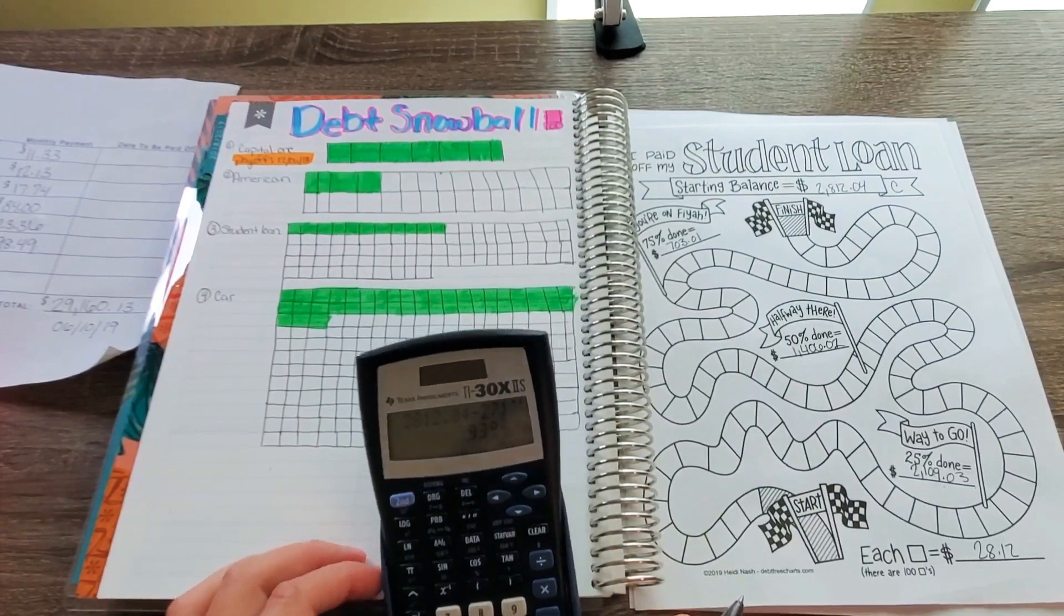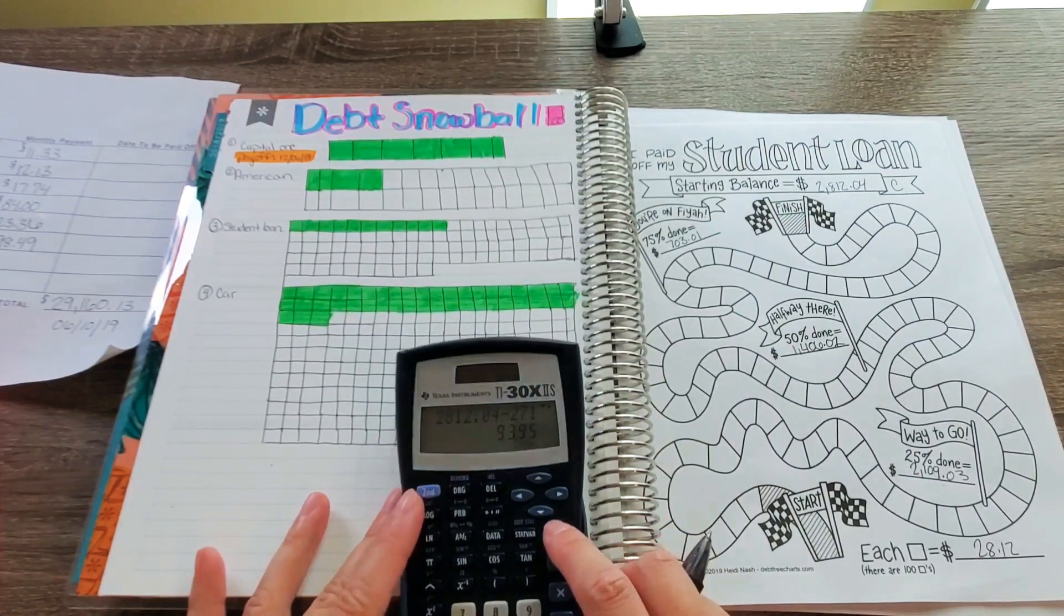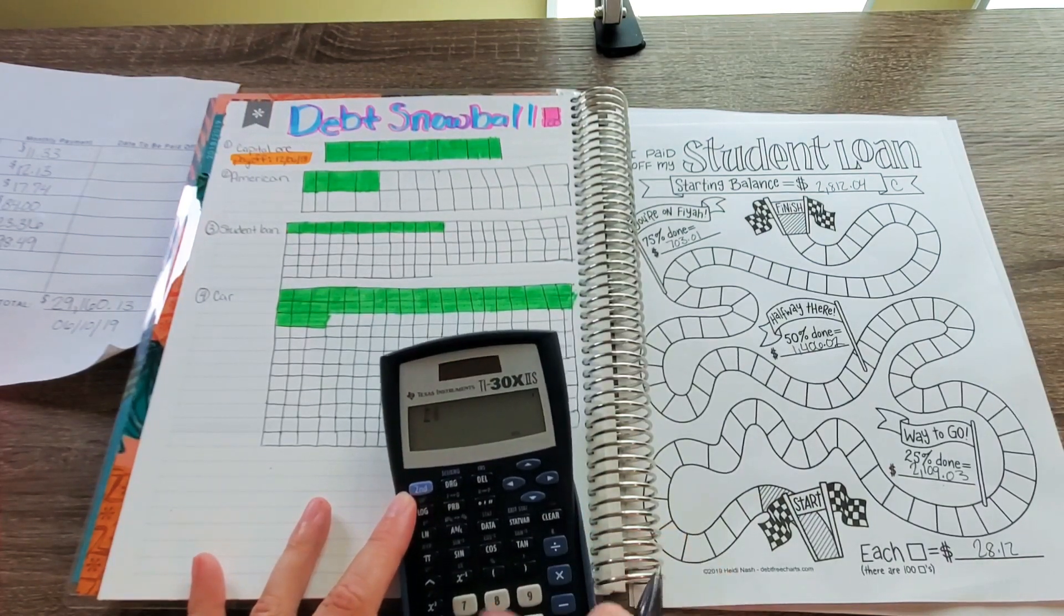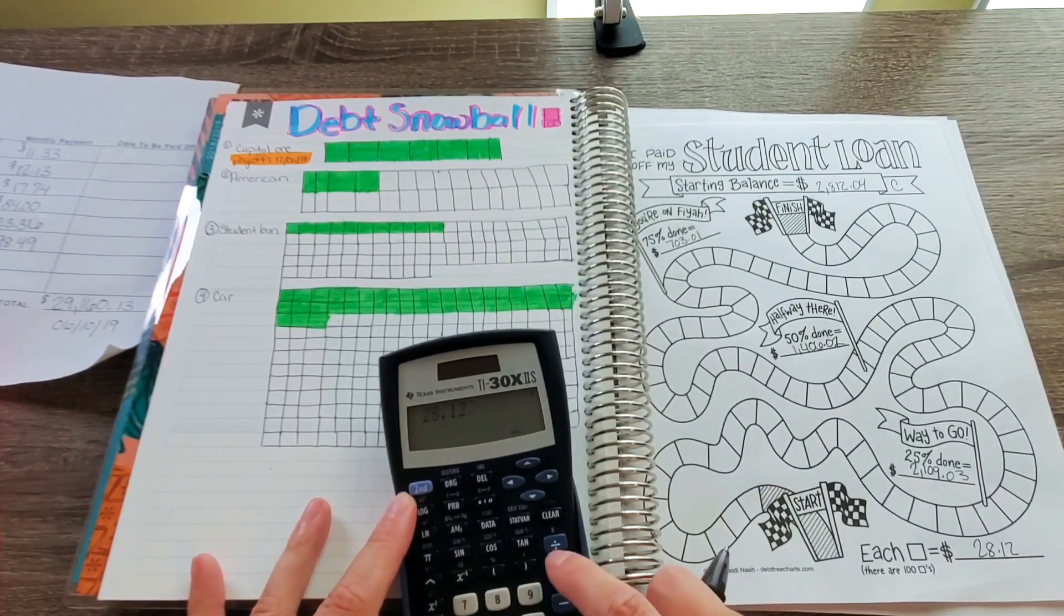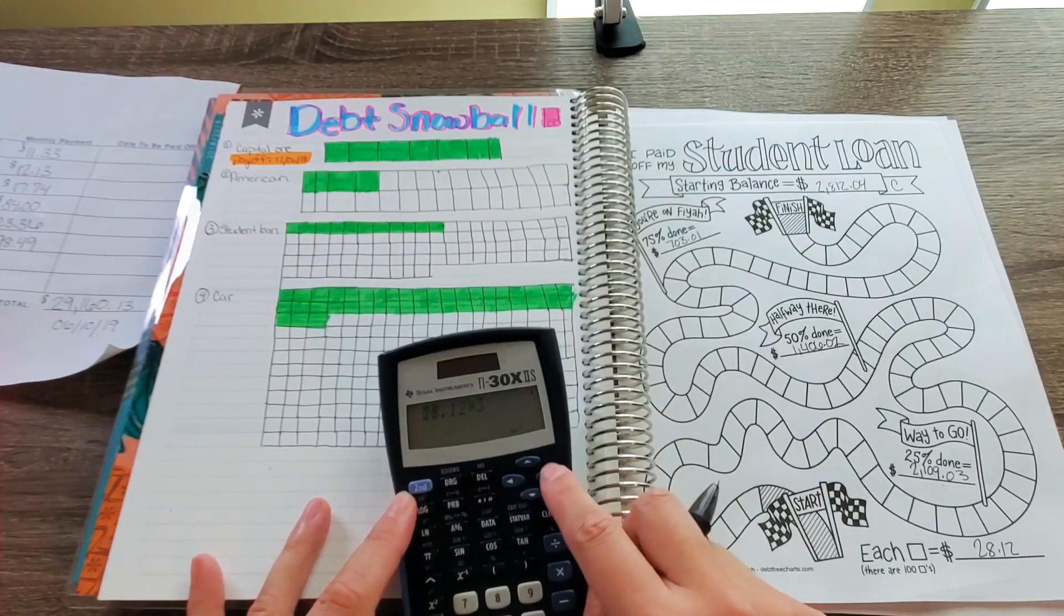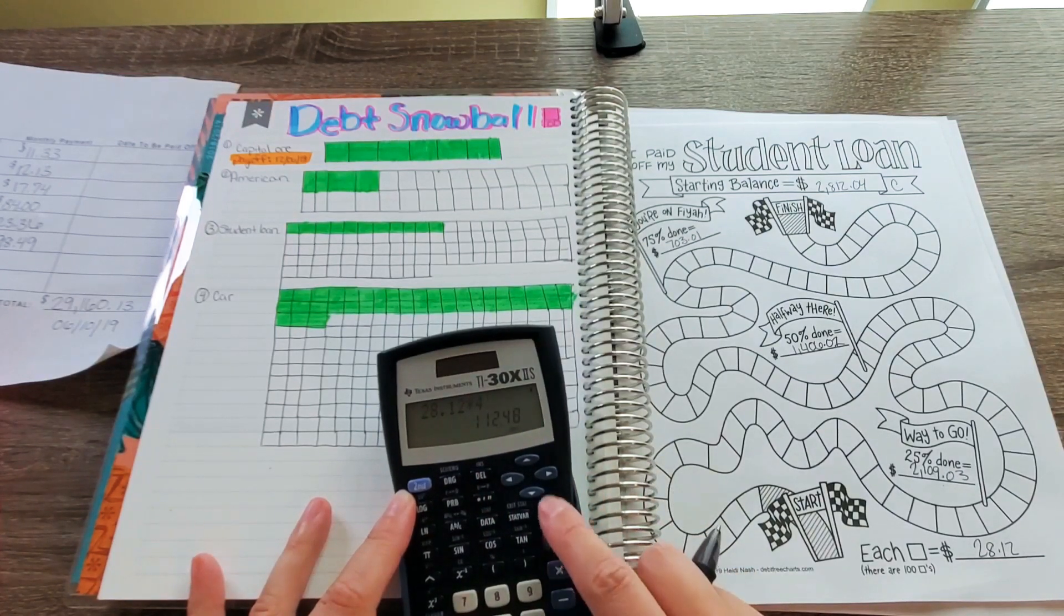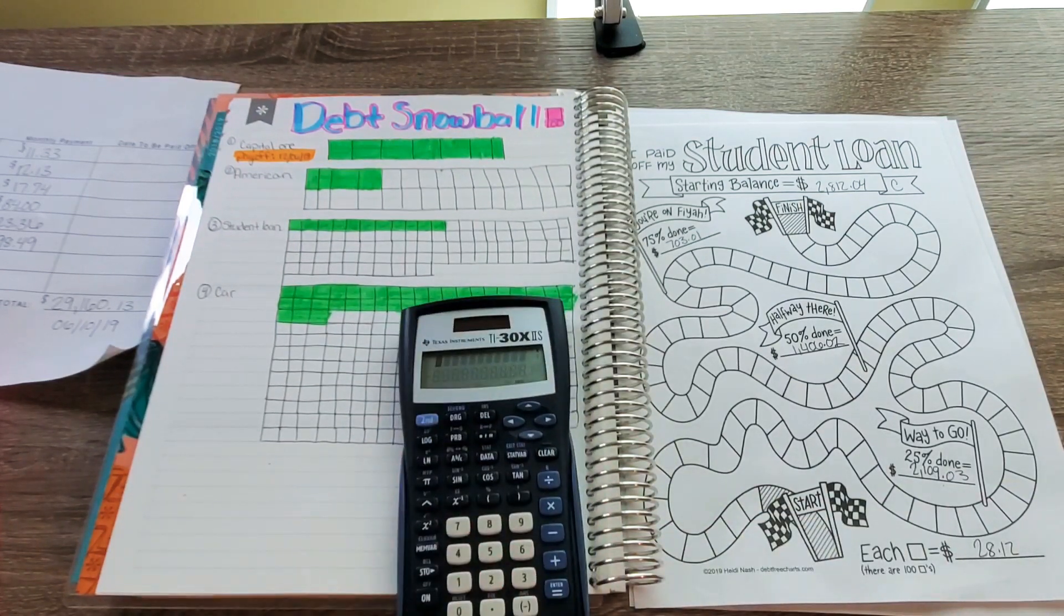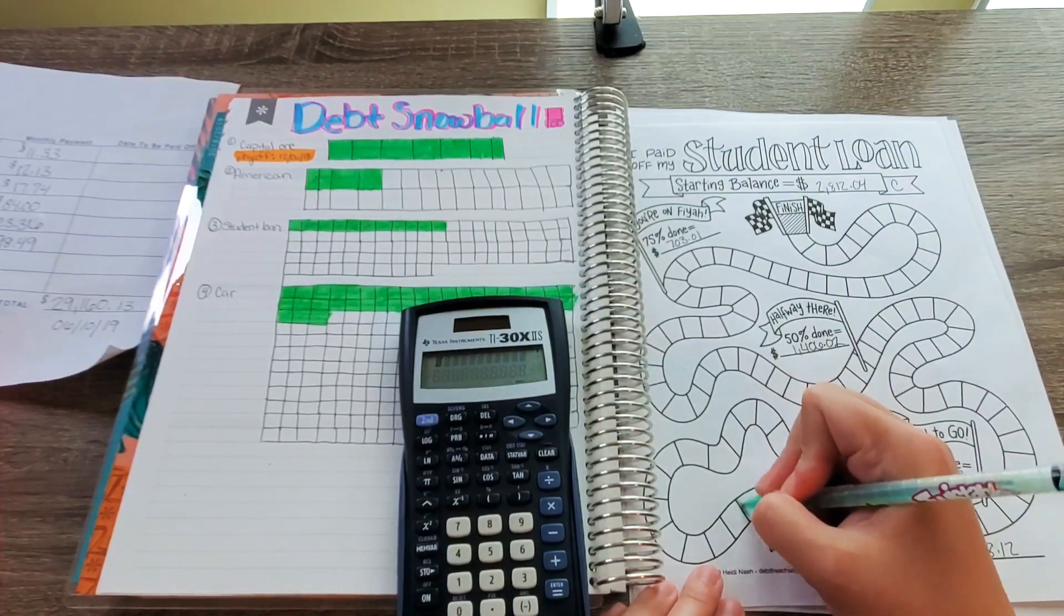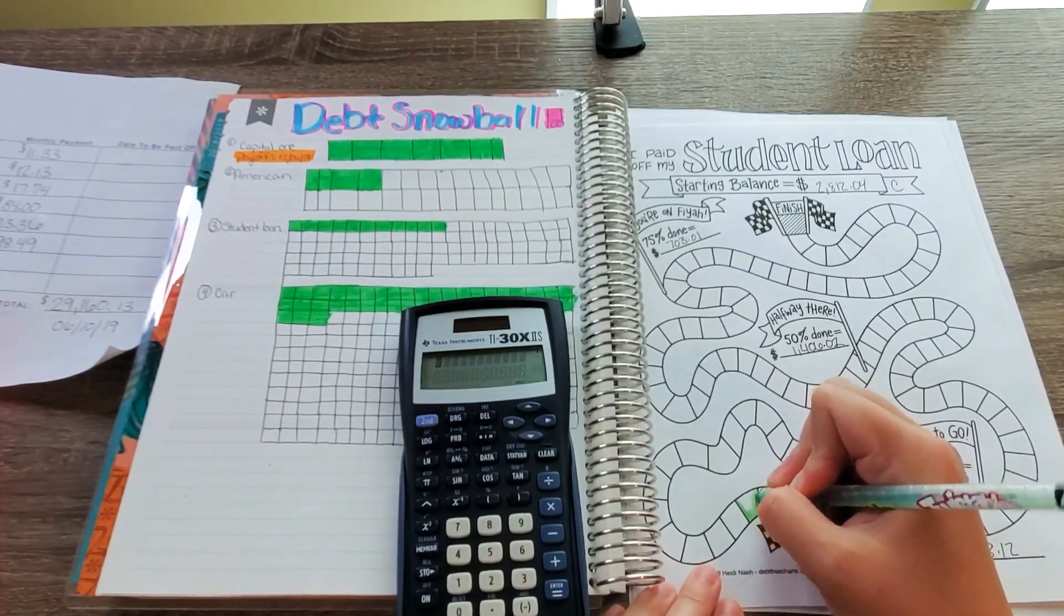Alright, so since we paid $93.95, so I'm just going to say $93. Let's see, $28.12 times 3, that's 84. I think we're just going to be doing 3, you guys. Yep. So we are going to be coloring 3 in. So very satisfying.